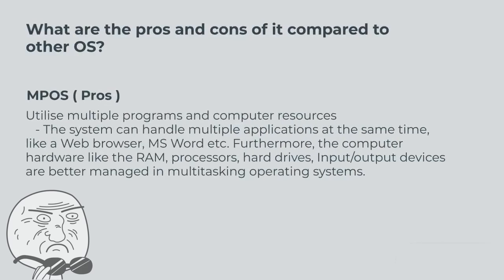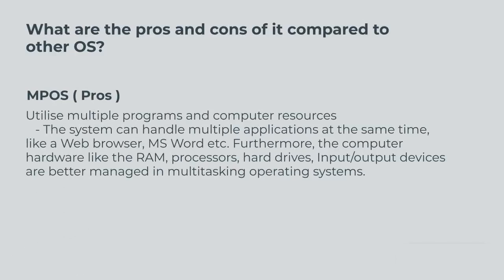Multiprocessing OS pros: utilize multiple programs and computer resources. The system can handle multiple applications at the same time, like a web browser, MS Word, etc. Furthermore, computer hardware like the RAM, processors, hard drives, and input/output devices are better managed in multitasking operating systems.